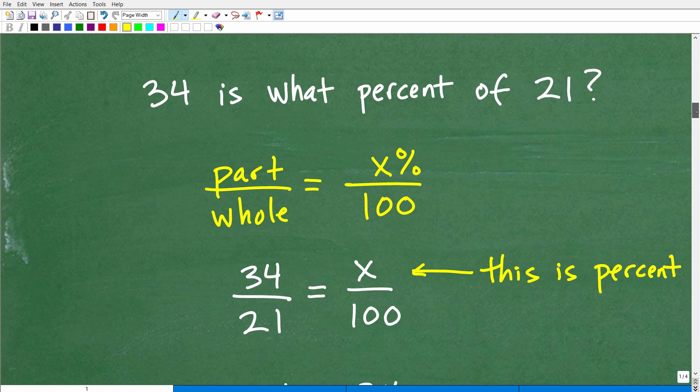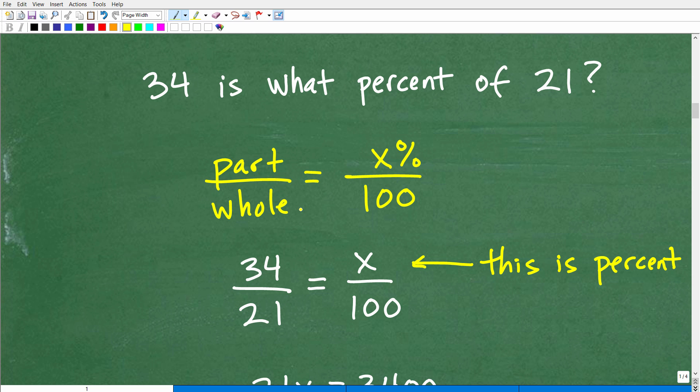Okay. So one thing you could do is set up a proportion. Now, a proportion in mathematics is two equal fractions. So for example, if I have a fraction 1 half, let's think of another fraction that's the same as 1 half. Let's say 5 over 10. This fraction is equal to this fraction.